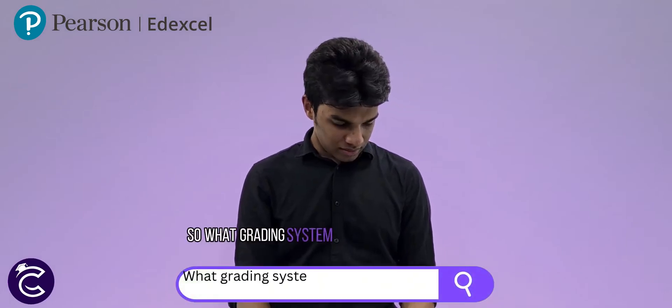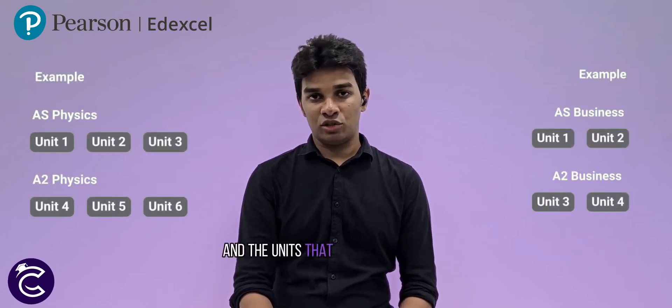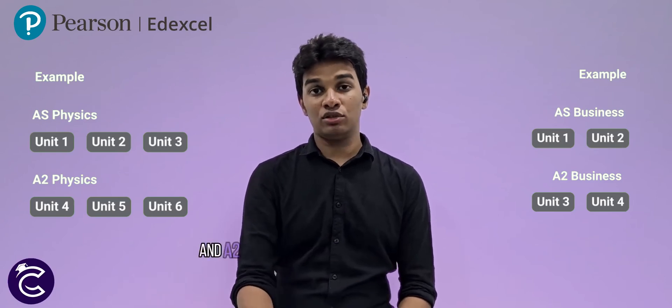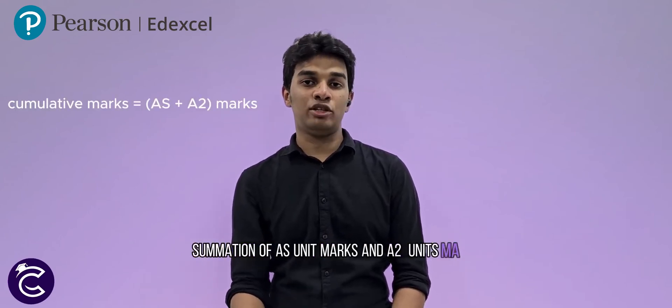So what grading system does Edexcel use for IAL A-levels? For Edexcel's IAL A-levels, the subjects are modular and the units you have to sit for are divided into AS units and A2 units. You have to sit for the AS units first before sitting for the A2 units. The grading system runs from A* to U, and your grade is calculated on the accumulated summation of AS unit marks and A2 unit marks. You receive your result at the end of A2.